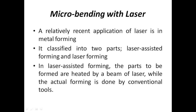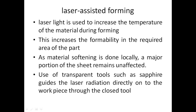Micro-bending with laser: a relatively recent application of laser is in metal forming. It is classified into two parts — laser-assisted forming and laser forming. In laser-assisted forming, the parts to be formed are heated by a beam of laser while the actual forming is done by conventional tools. Laser light is used to increase the temperature of the material during forming, increasing formability in the required area. Since material softening is done locally, a major portion of the sheet remains unaffected.